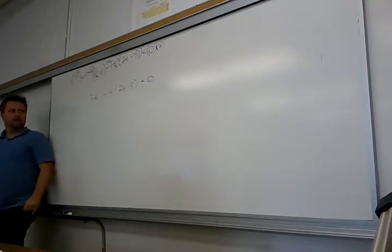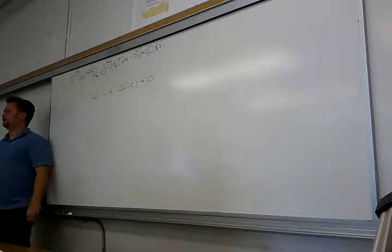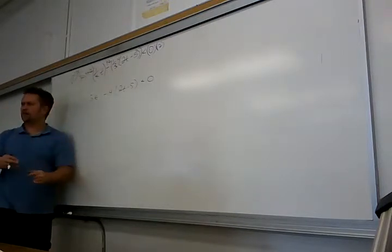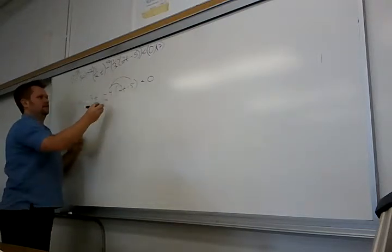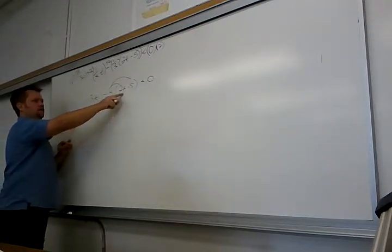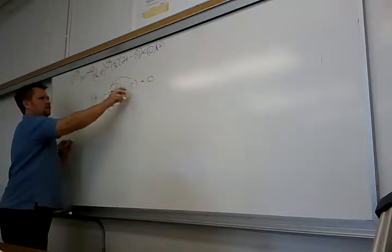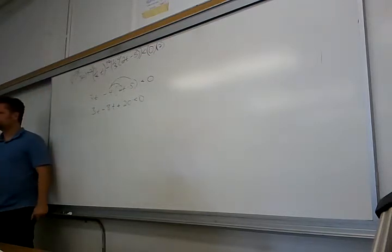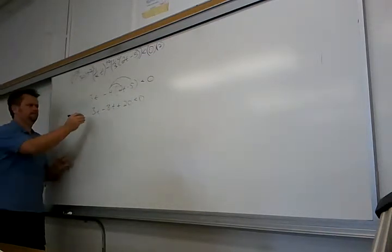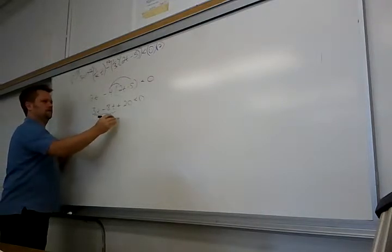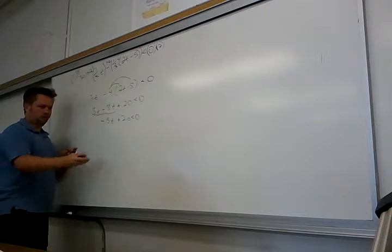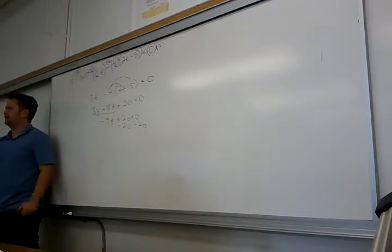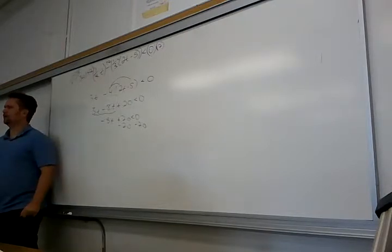Now it looks a lot better. Distribute the 4, get your like terms together. You get 3T minus 8T minus 20 less than zero. Minus 8T combined gives negative 5T. Some of you might have added 5T to keep it positive - that's fine too, you get to the same place.